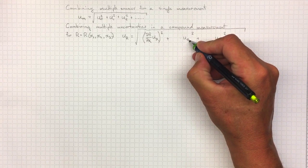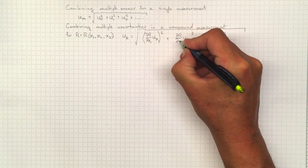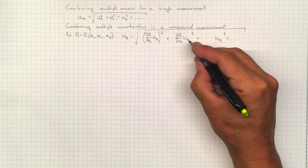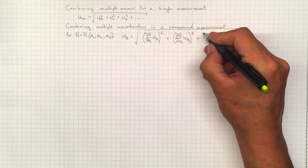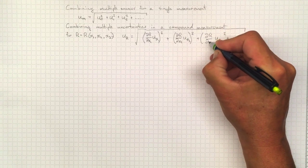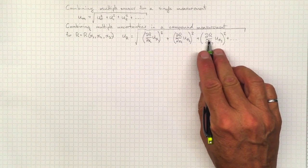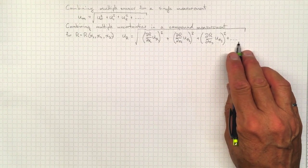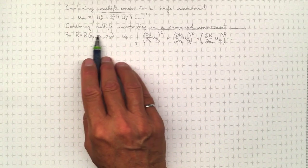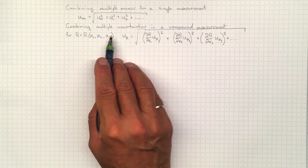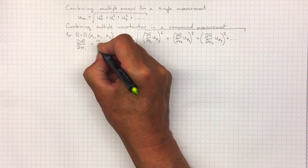Similarly, the contribution from x2 requires calculating ∂r/∂x2 multiplied by the uncertainty in x2, squared. Likewise, ∂r/∂x3 times the uncertainty in x3, squared, gives the contribution from x3. We sum the squares. To apply this, you need to be able to take a derivative of the function. If we don't know what that function is, it may be difficult to calculate ∂r/∂x1, for example. That will be really easy for a simple function like a sum or a multiplication, but may be more difficult for a complicated function of all these variables.